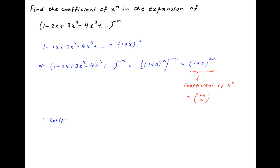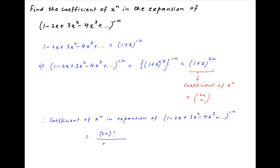Therefore, the coefficient of x raised to the power n in the expansion of the given expression (1 minus 2x plus 3x squared minus 4x cubed plus and so on) raised to the power minus n is equal to 2n choose n, which is (2n)! divided by (n! times n!), equal to (2n)! divided by (n!)², which is the required answer.